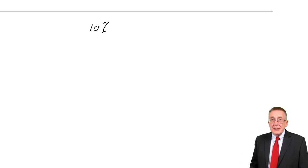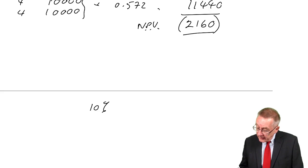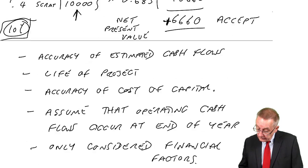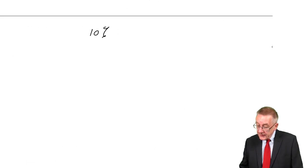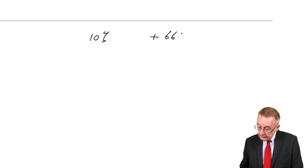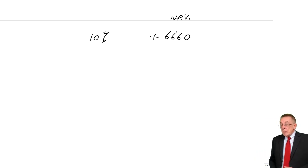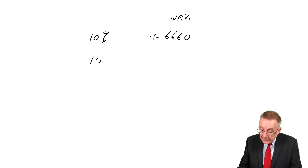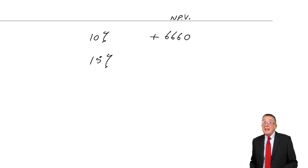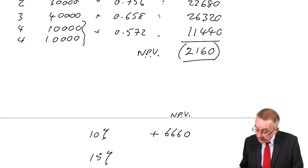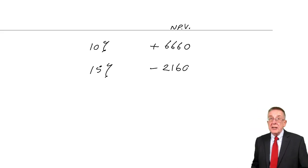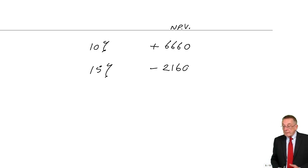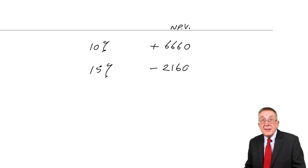A formula can end up getting awfully confusing. If you see the logic, then it becomes obvious and you don't need to learn a formula. Just watch. We tried at 10% and we ended up with an NPV of plus 6,660. We want to know what rate gives an NPV of zero and we knew it was higher than 10. So we tried 15% and the NPV was lower, it was minus 2,160.